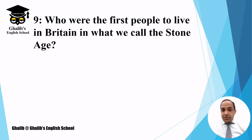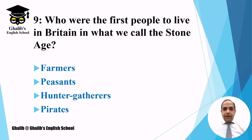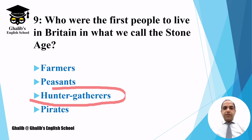Question number nine: who were the first people to live in Britain in what we call the Stone Age? Were they farmers, peasants, hunter-gatherers, or pirates? The answer is hunter-gatherers — these people used to hunt horses and deer.